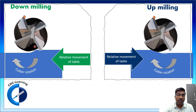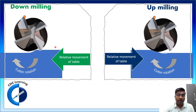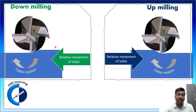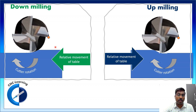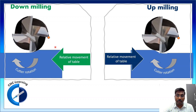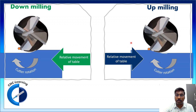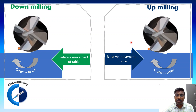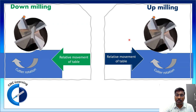CNC machines are rigid, and in most cases where clamping rigidity and machine rigidity are available, down milling is preferred. In very rare cases where clamping rigidity is less, up milling can produce a certain result.